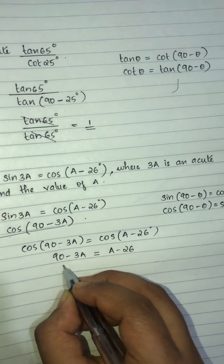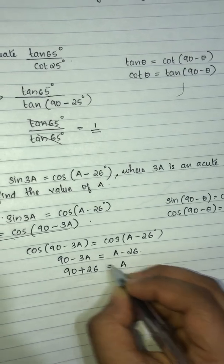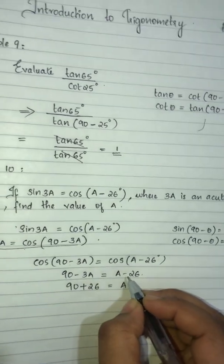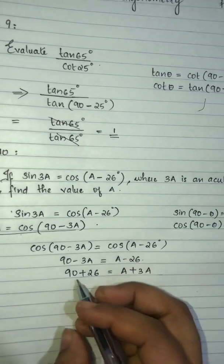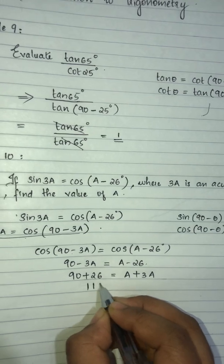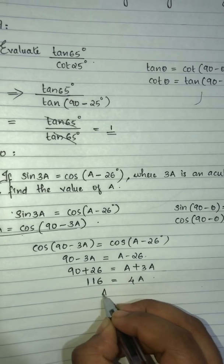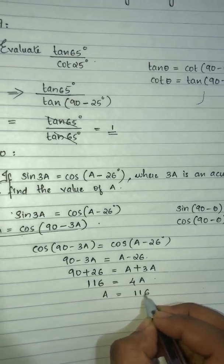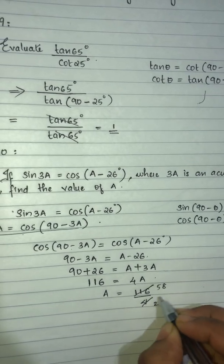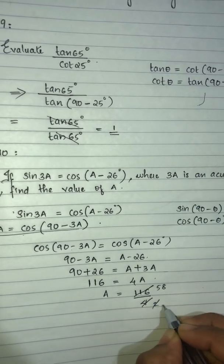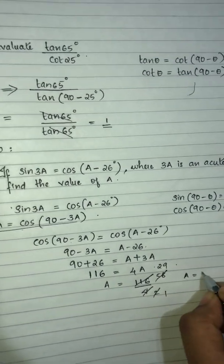So 90 plus 26 equals a plus 3a. That gives us 116 equals 4a. Therefore a is equal to 116 divided by 4, which gives a equals 29 degrees.